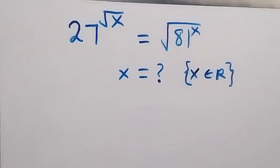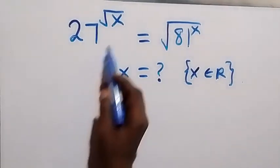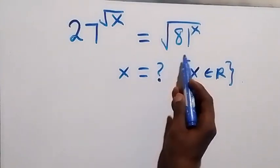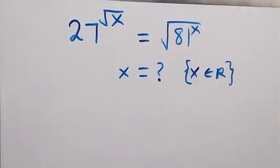Hello, you are welcome. How to solve this nice exponent problem involving roots: we have 27 raised to the power root x, equals root 81 raised to power x. Here we want to find the value of x, where x is a member of the real numbers.